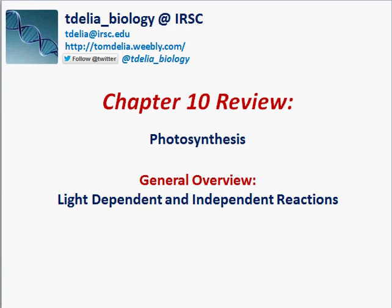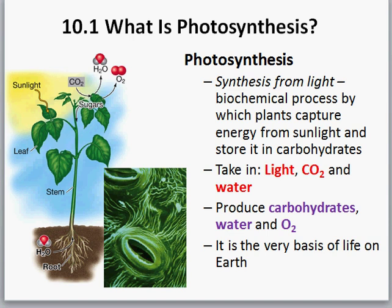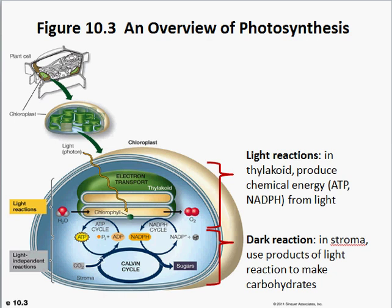This is the chapter 10 review for photosynthesis, focusing on the light dependent and independent reactions. Photosynthesis means 'synthesis from light.' Plants take in light, carbon dioxide, and water, and they make carbohydrates — sugars — along with water and oxygen as byproducts. So when we say photosynthesis, they're making sugar from light, and that sugar can then be used as a subsequent source of energy.